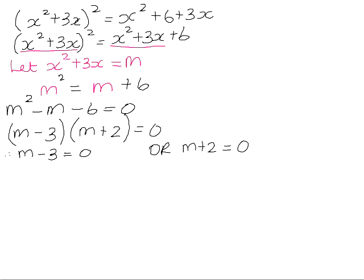But we were not solving this equation for m — we were solving it for x. So our next job is to go back and replace the m's with x squared plus 3x. So we will have x squared plus 3x minus 3 equals 0, and the second equation will be x squared plus 3x plus 2 equals 0.